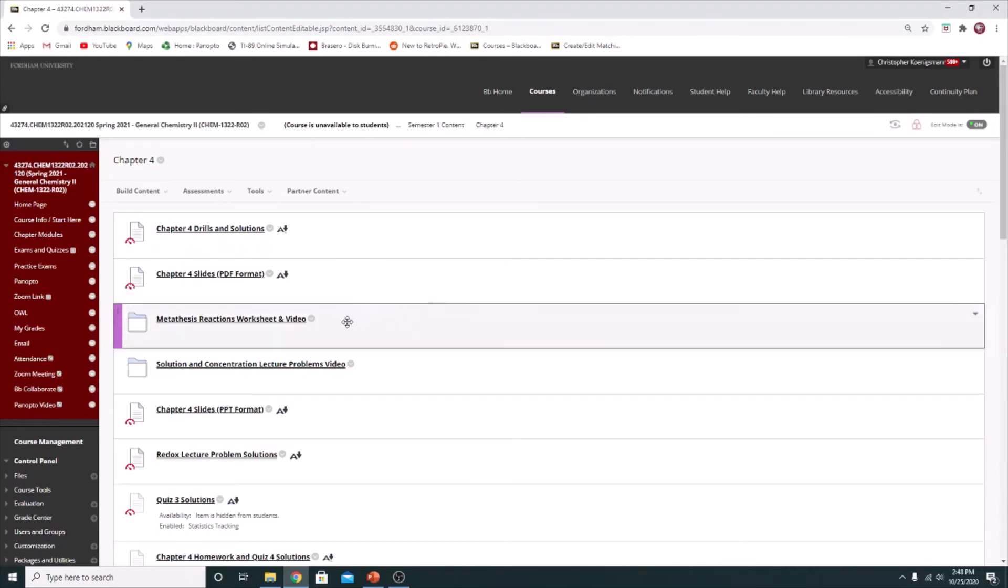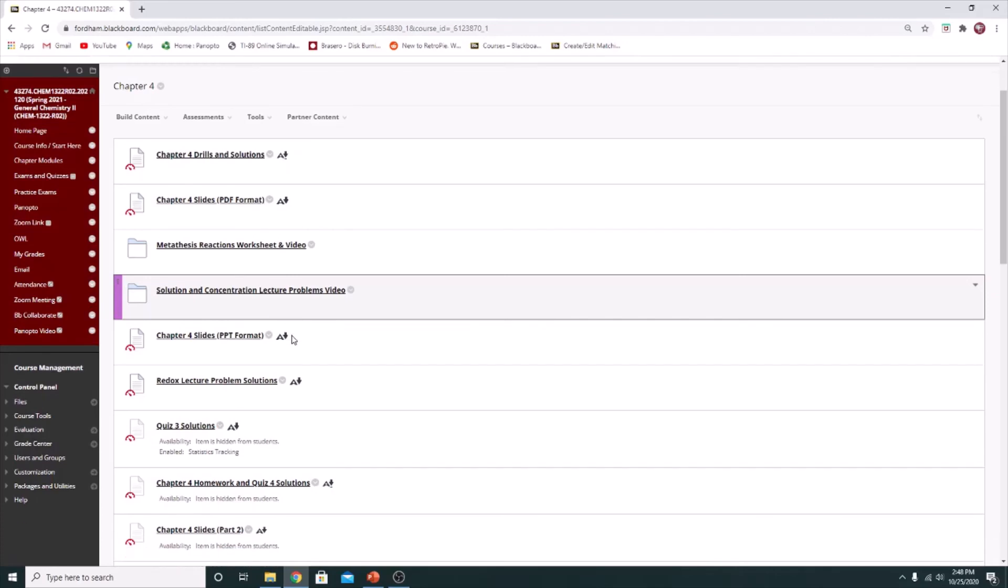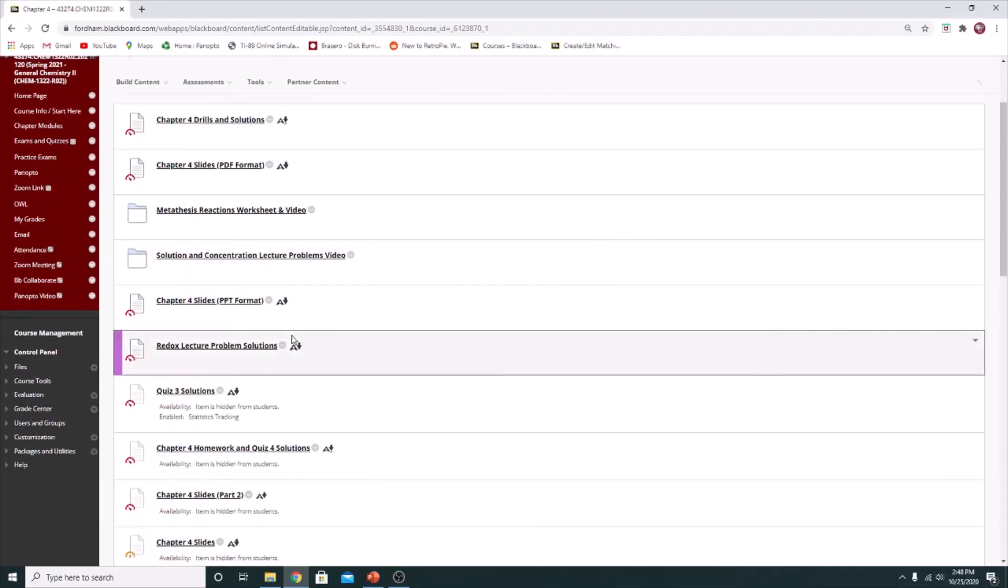Some things to look at in Chapter 4 that might be helpful are the Metathesis Reactions worksheet video, most notably the acid-base portion of that, and then the Solution and Concentration Lecture Problems video, which has a whole number of examples of acid-base titrations and other solution concentration things that may come up in Chapter 15. This is a good resource to go back and review if you don't remember Chapter 4 very well from last semester.